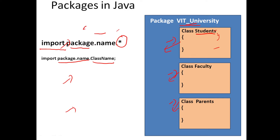You have already done this — you are using the Scanner class. The Scanner class is present in the java.util package. When you put dot-star, it means you are importing all the other classes from the util package as well. But when you want only the Scanner class, you write: java.util.Scanner. So you are already using import statements. Now you understand what a package is and what import means. You can also create your own user-defined packages. There are many built-in packages in Java, and we can create our own user-defined packages.